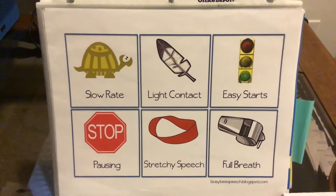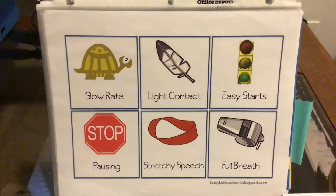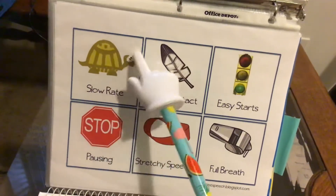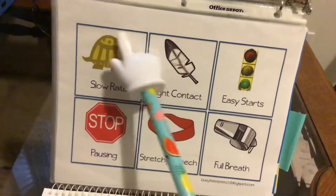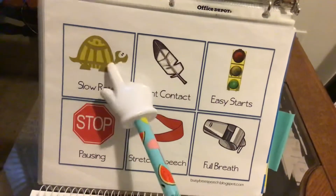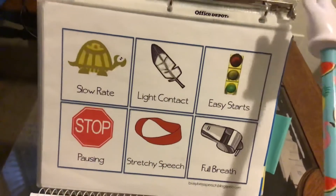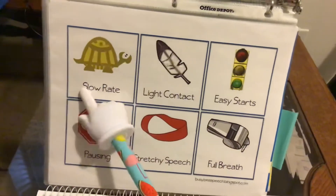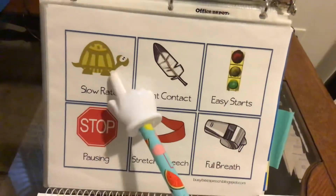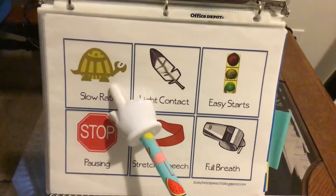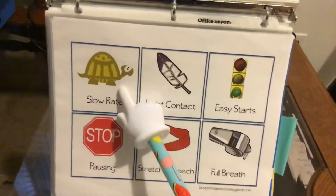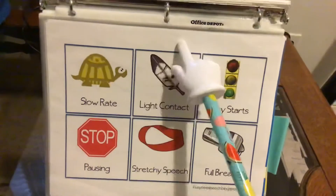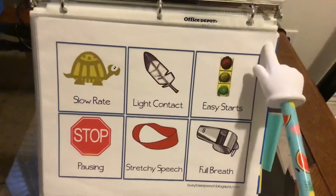For today's session, we are going to work on the fluency strategy: slow rate. And if you notice, there's a turtle for this. Does a turtle ever go fast? Not really. So with slow rate, we are going to talk like turtles. It's called turtle talk, where every syllable that we say is nice and slow.